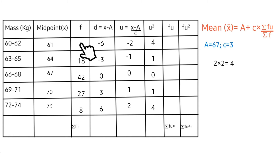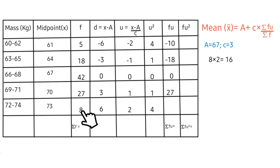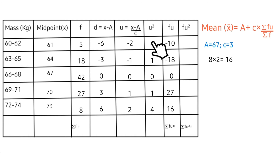The first fu value: 5 times minus 2. Next is 18 times minus 1. Then 42 times 0. Then 27 times 1. Lastly, 8 times 2 gives 16. The last column is fu². fu² entails the product of f and u²: 5 times 4. Next is 18 times 1. Then 42 times 0. Then 27 times 1. Lastly, 8 times 4.